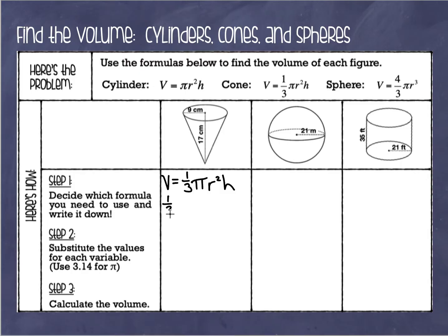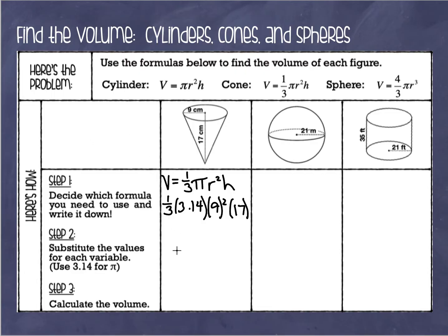I'm going to write one third times 3.14 for pi, and enter my radius, which is 9 squared, multiplied by the height. The height always has to be the straight up and down height — if they give us the lateral height, we wouldn't use that. Let's carefully enter all of this into the calculator — for some people, this is where it all falls apart. So my volume is 1,441.26.